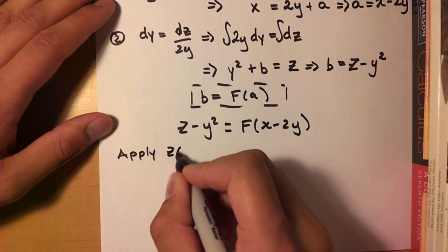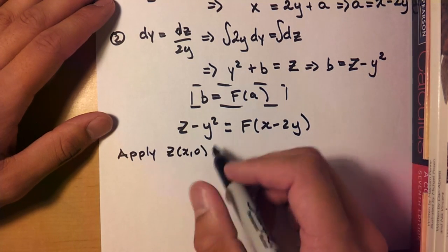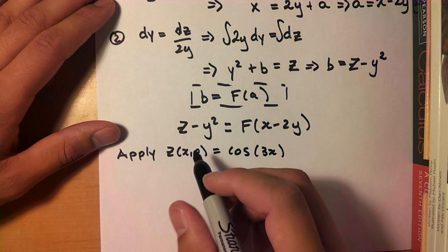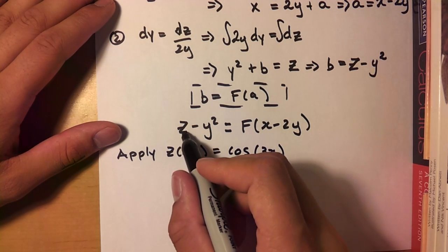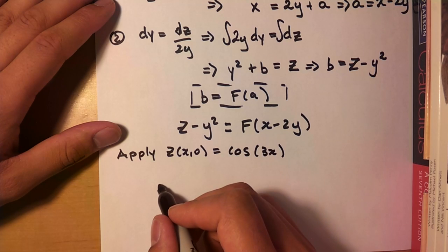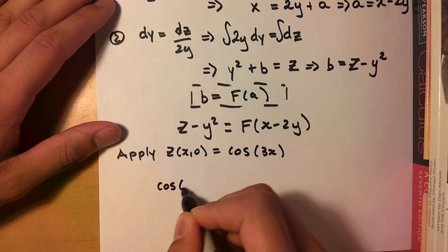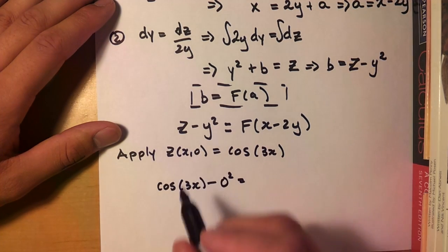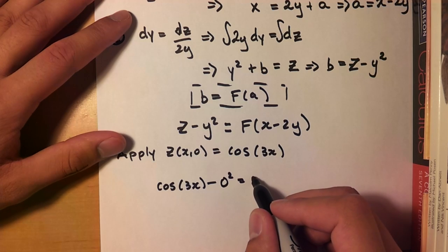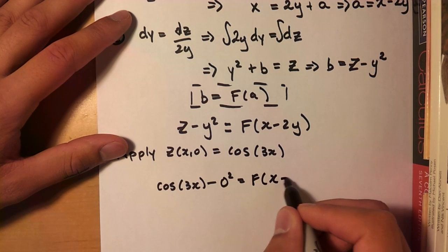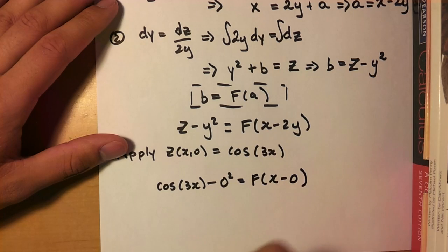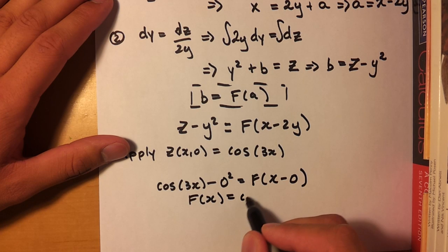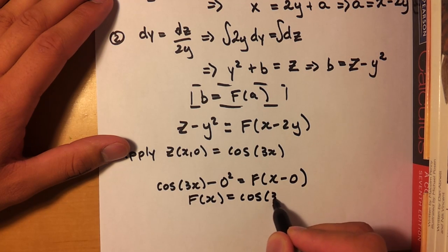Alright, so apply z of x and 0 is equal to cos of 3x. So here we can just plug in cos of 3x minus 0 squared. Remember, that's 0. Is equal to f of x minus 0. 2 times 0 is 0. So then f of x is equal to cos of 3x.